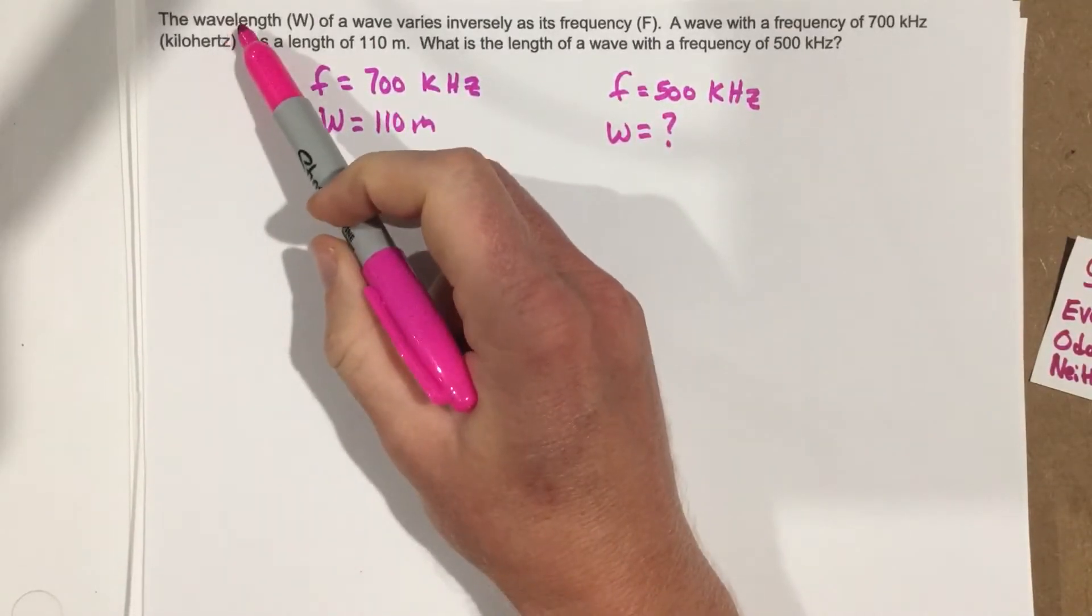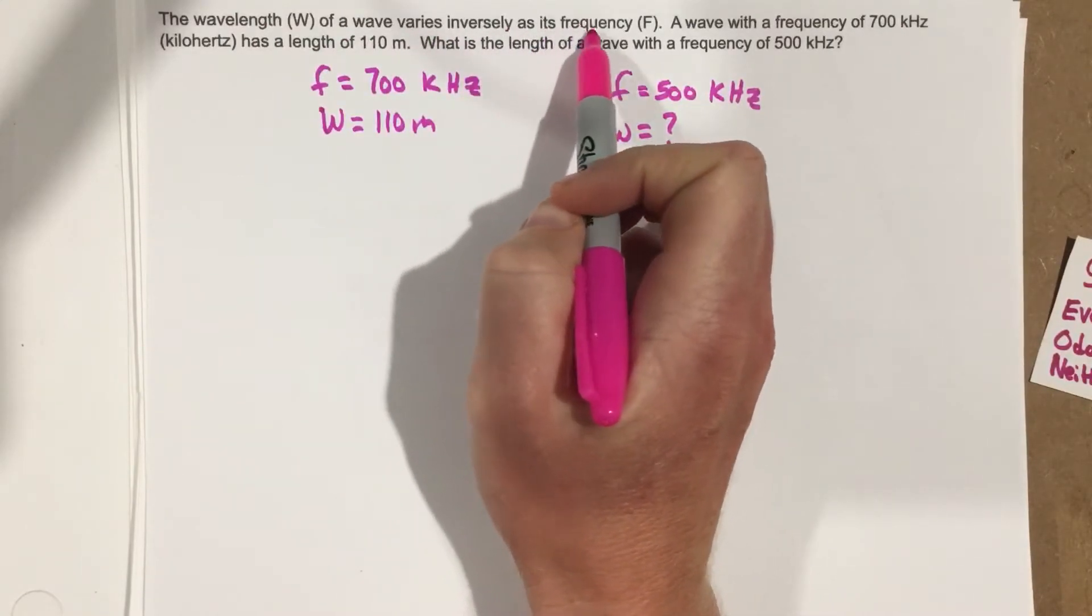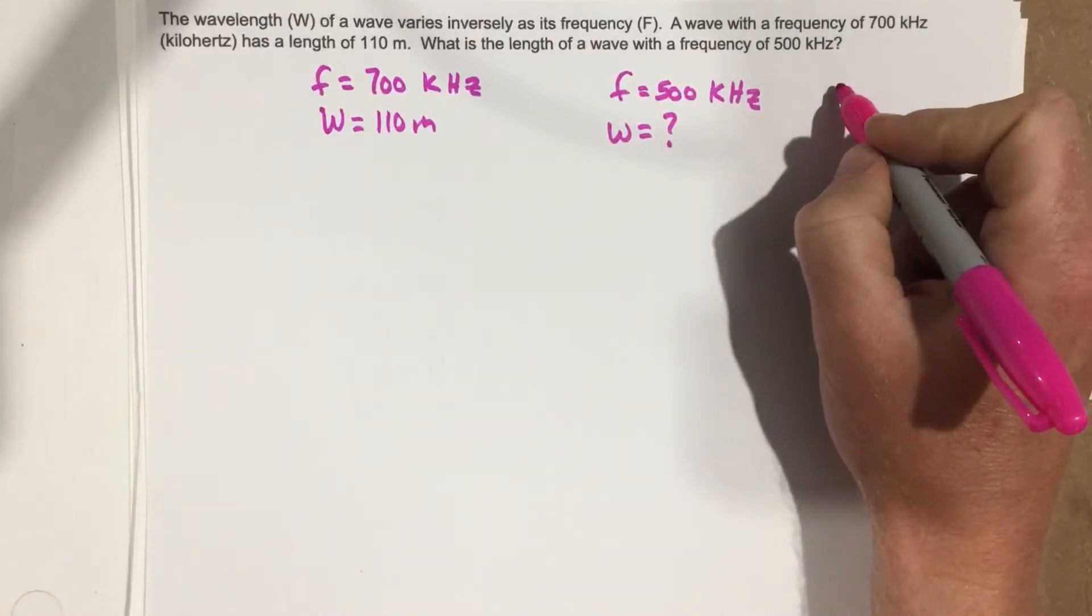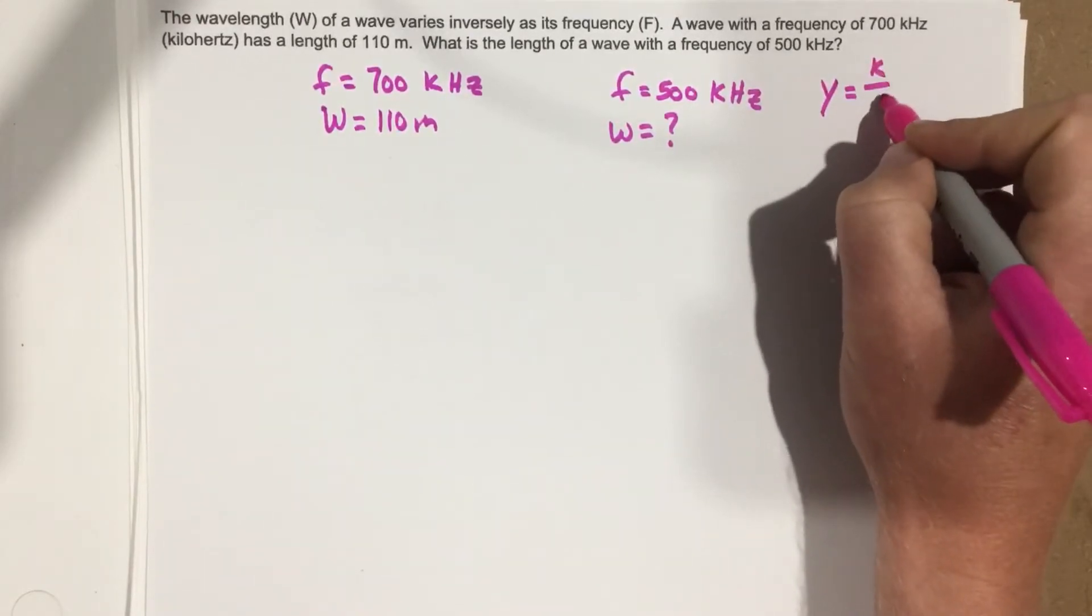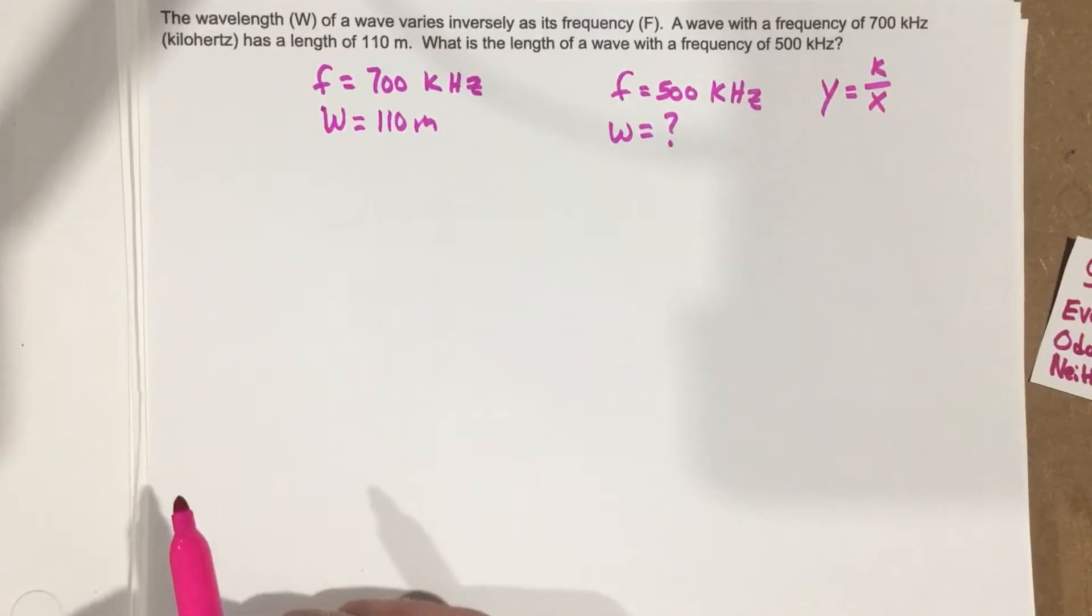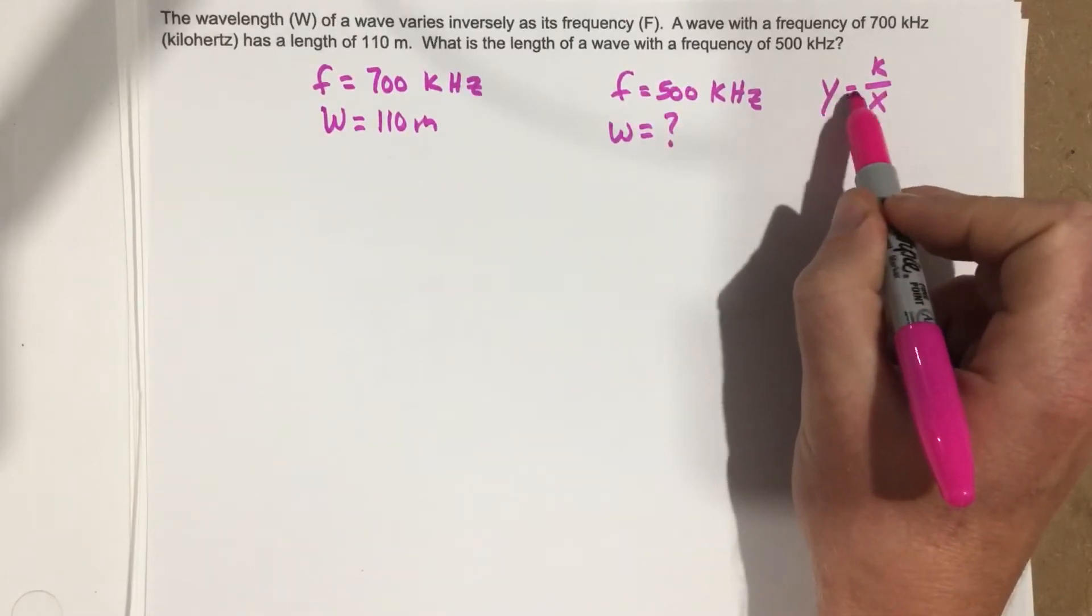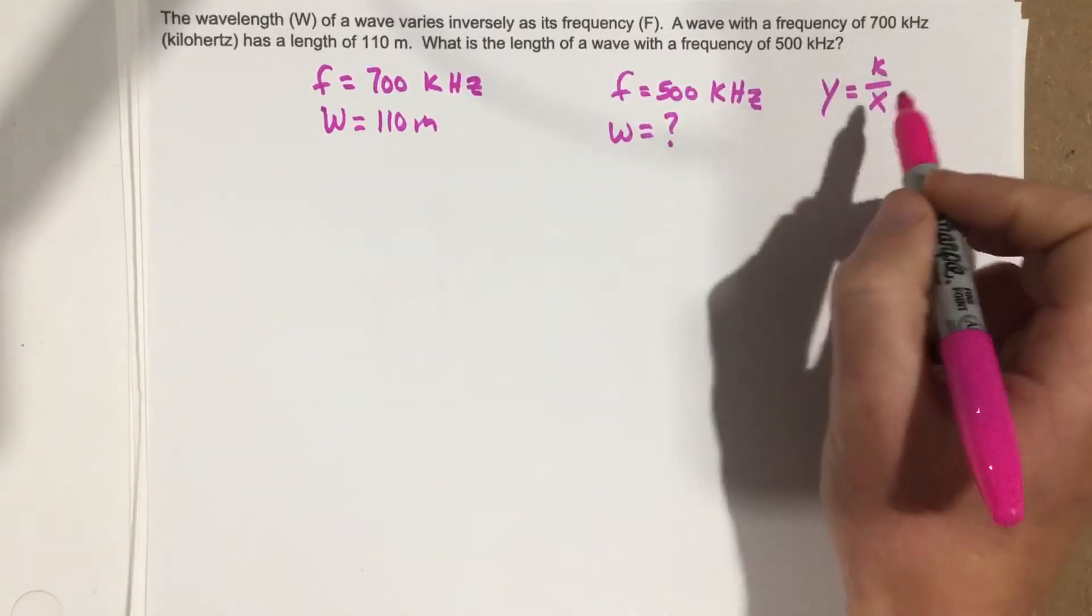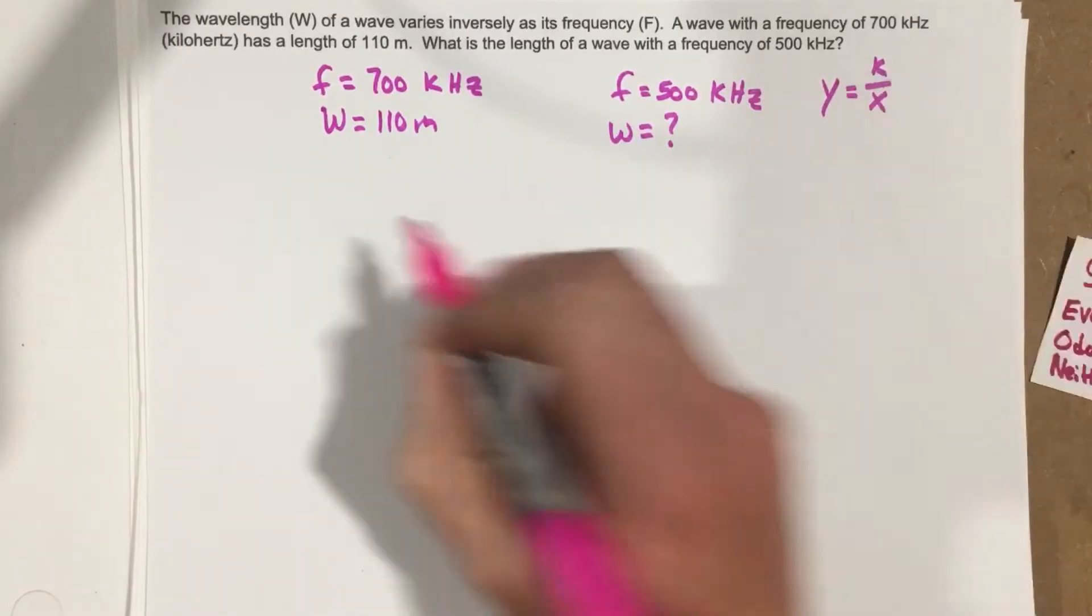Now they give us an equation. They say the wavelength of a wave varies inversely as its frequency f. So if you remember what inversely proportional looks like, that would be y equals k over x, where k is a constant of proportionality and x is that inversely proportional piece to it. y equals this proportional constant over x.